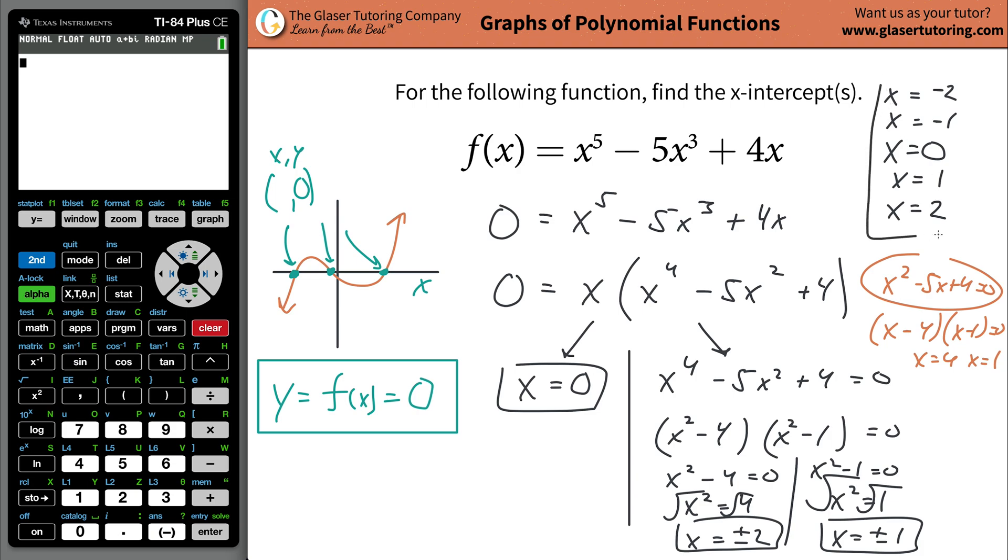So you actually should have five intercepts. In other words, this function should cross the graph five times. Now, sometimes that will be the case when you have a leading coefficient of five, you'll get all five x intercepts, but there's no law that says you need all five, as you might have noticed in some of our other examples.